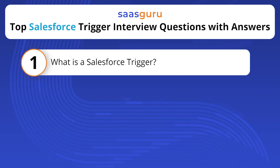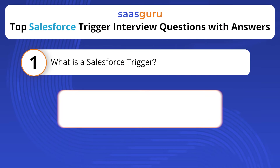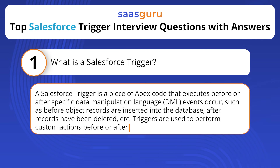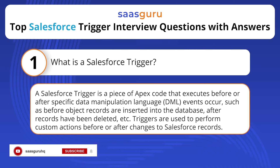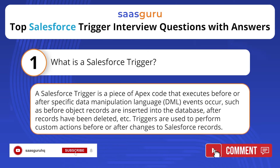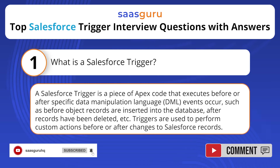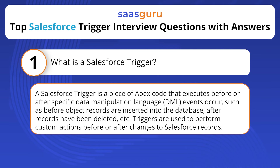What is a Salesforce trigger? A Salesforce trigger is a piece of Apex code that executes before or after specific data manipulation language (DML) events occur, such as before object records are inserted into the database or after records have been deleted. Triggers are used to perform custom actions before or after changes to Salesforce records.